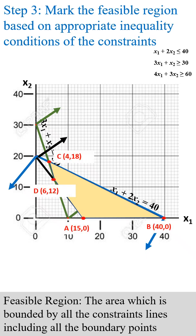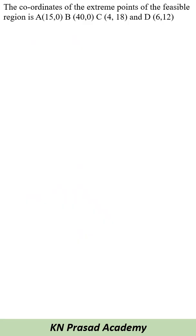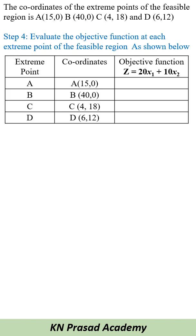Next, mark the extreme corner points of the feasible region. Then calculate the objective function at each extreme point.